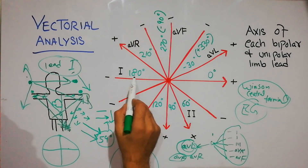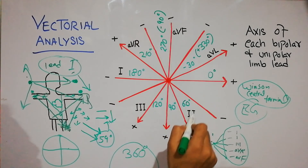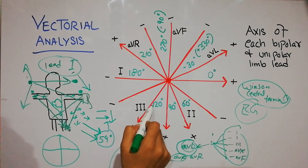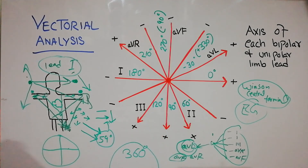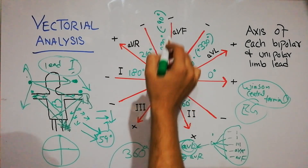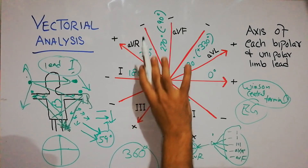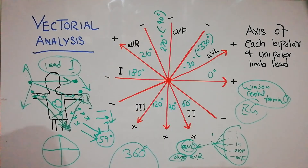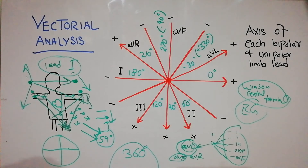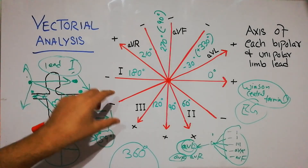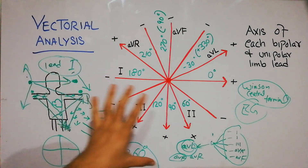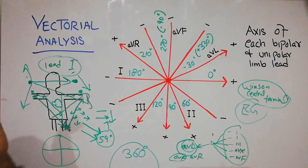To summarize: Lead I is 0 degrees, Lead II is 60 degrees, AVF is 90 degrees, Lead III is 120 degrees, and AVR is 210 degrees. AVF in the reverse direction would be 270 degrees or minus 90 degrees, and AVL is minus 30 degrees or 330 degrees. These are the fixed values against which the cardiac vector will be measured — a measuring scale for determining the cardiac axis.